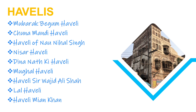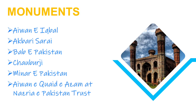There are some monuments in Lahore which remind us of great personalities of the past. Some of them are: number one, Eivan-e-Iqbal; number two, Akbari Sarai; number three, Bab-e-Pakistan; number four, Chauburji; number five, Minar-e-Pakistan; and number six, Eivan-e-Quaid-e-Azam, which is located in Nazria Pakistan Trust.